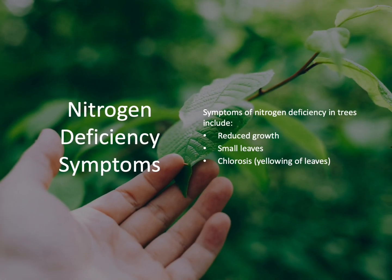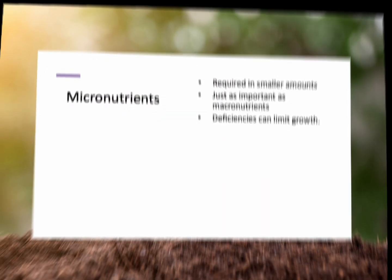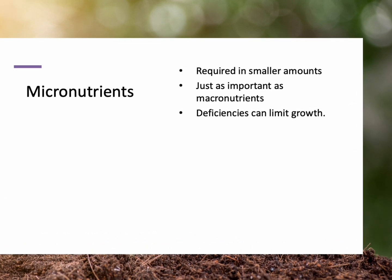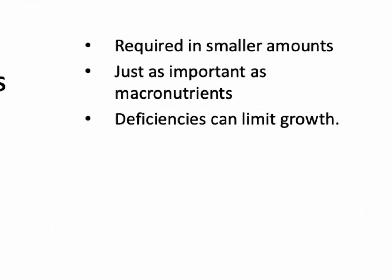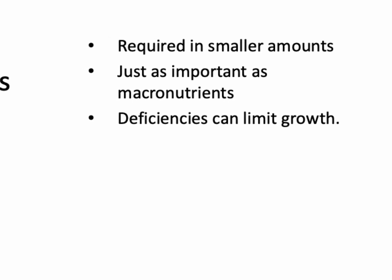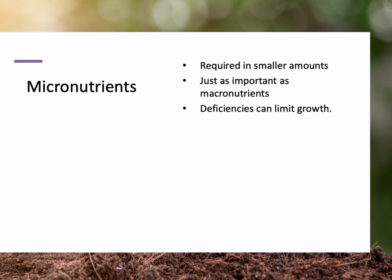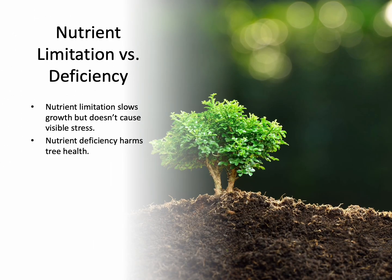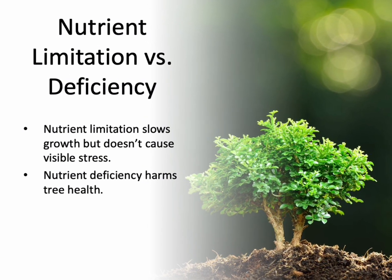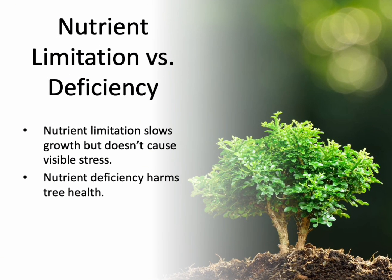One example is nitrogen deficiency. Symptoms include reduced growth, small leaf size, and leaf chlorosis — yellowing of the leaves. Micronutrients are just as important; they're all needed by the tree but in much smaller quantities, and you definitely don't want to overdo it. Deficiency can limit growth and cause harm just as much as macronutrient deficiencies. The distinction between nutrient limitation and deficiency: limitation slows growth, while deficiency actually affects overall tree health.